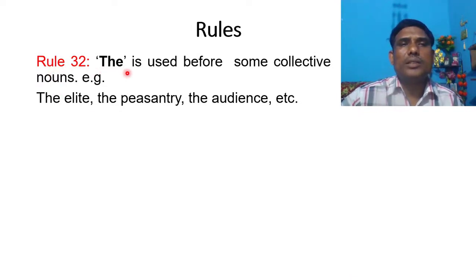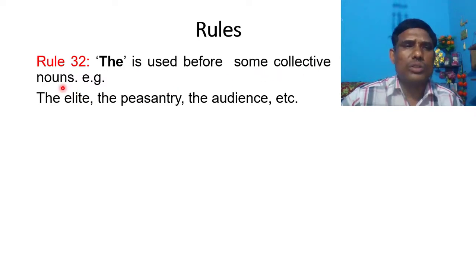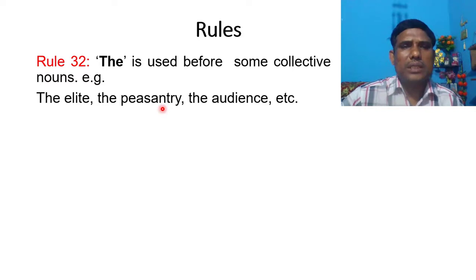Rule number 32: THE is used before some collective nouns. For example: the elite, the peasantry, the audience, etc.